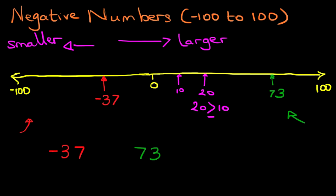So in this case, we've got minus 37 and 73. So which way does the arrow point? Which is a smaller number? Well, it is minus 37. It's pointing to the smaller number, which is minus 37.